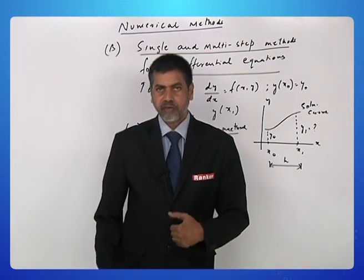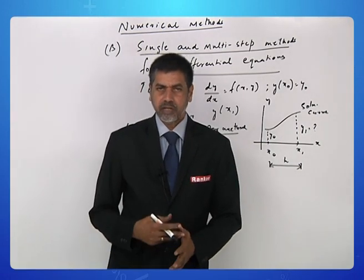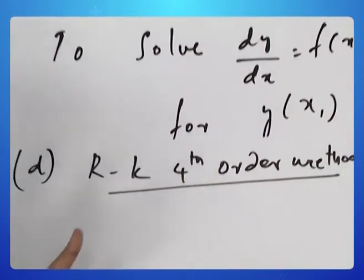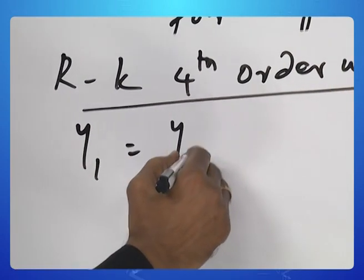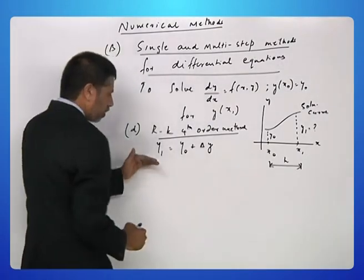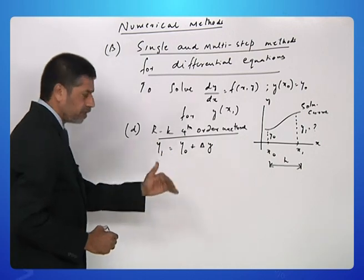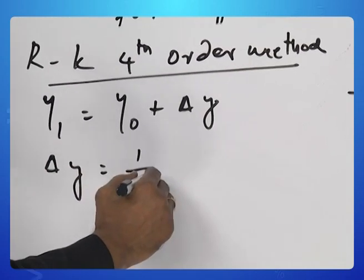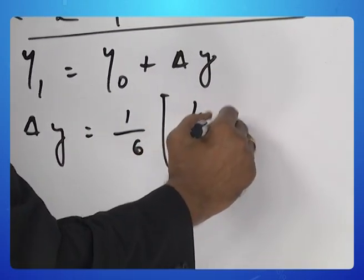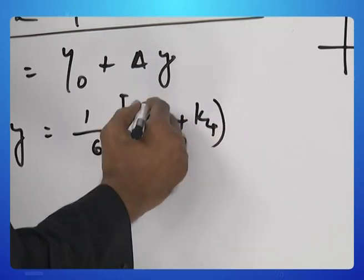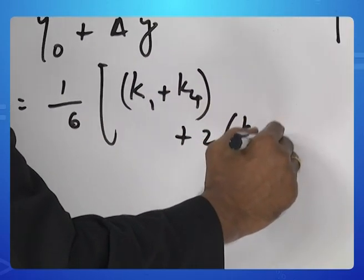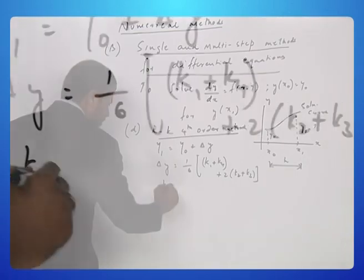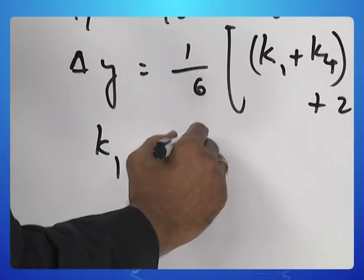We now take up the RK fourth order method, which is considered a better improvisation of the second order method. It goes very similar to second order. Estimate y1 from y naught plus delta y. Delta y comes as one sixth of k1 plus k4 plus 2 times k2 plus k3. Let us see the formulas for k1, k2, k3 and k4.